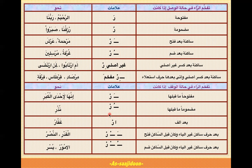وقفاً دوسری condition: Ra ساکن ہو اور اس سے پہلے ضمہ (پیش) آیا ہو تو Ra موٹا پڑھیں گے۔ مثلاً 'نُشُوْر' میں Ra کو سکون دیں گے کیونکہ stop کرنا ہے، پیچھے دیکھیں تو واؤ پر ضمہ ہے، اس لئے Ra موٹا ہوگا: 'نُشُور' کریں گے، 'نُشُوِر' نہیں۔ اگر ہم وصلاً پڑھتے تو بھی Ra پر ضمہ کی وجہ سے پتلی نہ ہوتی۔